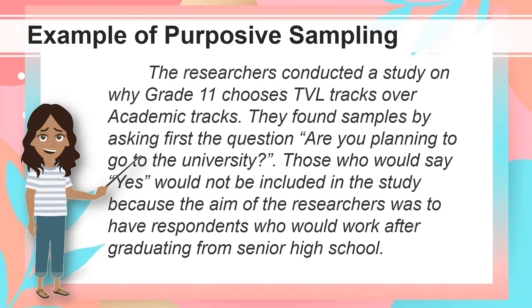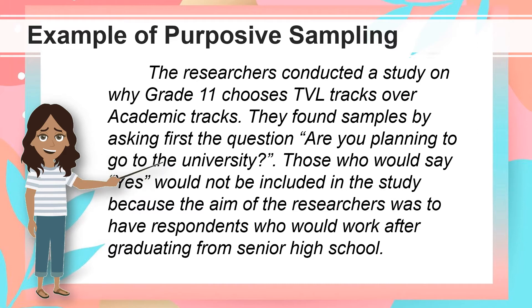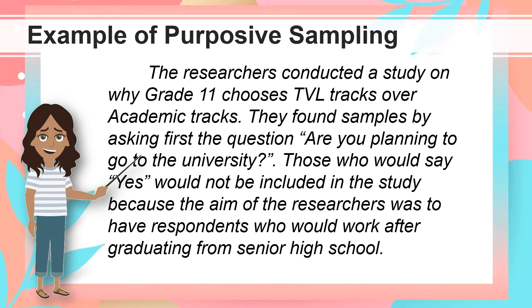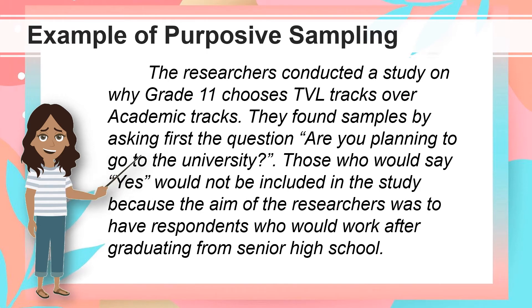Here's an example of Purposive Sampling. The researchers conducted a study on why Grade 11 students choose TVL tracks over academic tracks. They found samples by asking first a question: 'Are you planning to go to the university?' Those who would say yes would not be included in the study, because the aim of the researchers was to have respondents who would work after graduating from senior high school.